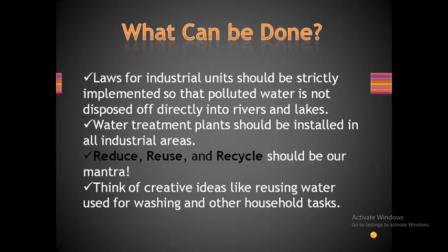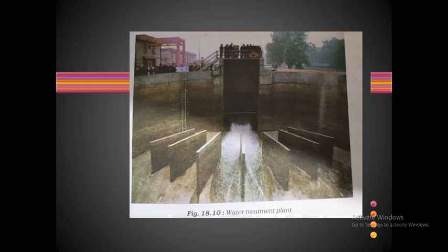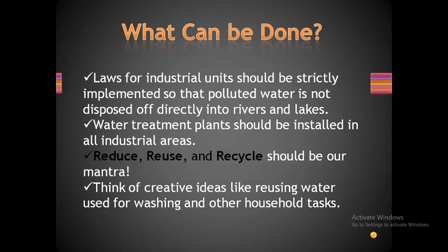Laws for industrial units should be strictly implemented so that polluted water is not disposed of directly into rivers and lakes. Water treatment plants should be installed in all industrial areas. As you can see in the figure, this is a water treatment plant in which sewage water is treated and transformed into a usable form.